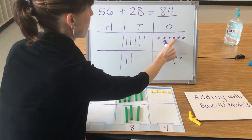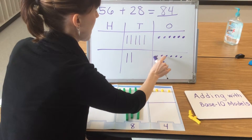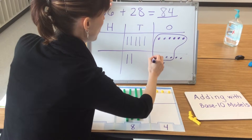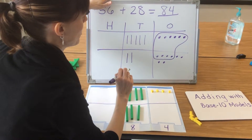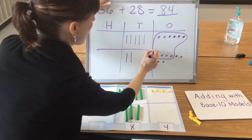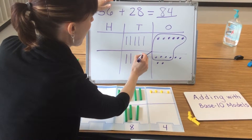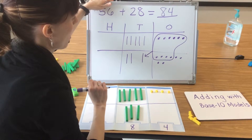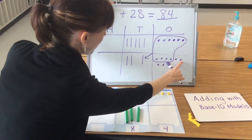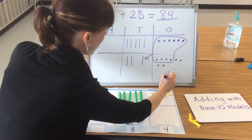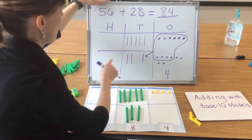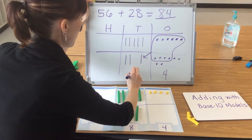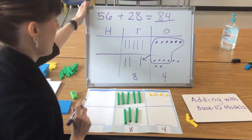When I compose a 10 in my model, I'm going to circle 10 ones to show that I'm putting them together to make a new 10: 1, 2, 3, 4, 5, 6, 7, 8, 9, 10. I circle these 10 ones to show that I'm grouping them together to form a new 10. Then I draw an arrow into the tens place and draw the new 10 I am making from those 10 ones. I count the remaining ones: 4. Then I count my tens: 1, 2, 3, 4, 5, 6, 7, 8. Don't forget to include that new 10 in your total — 84.